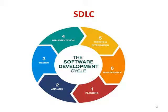SDLC has six different phases: planning, analysis, design, implementation, testing and integration, and maintenance. SDLC is a process that produces software with the highest quality and the lowest cost in the shortest time possible.